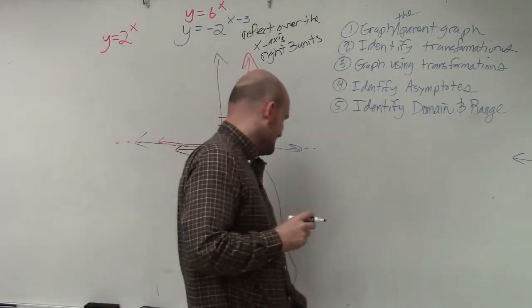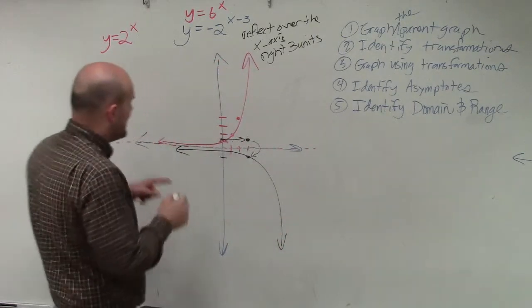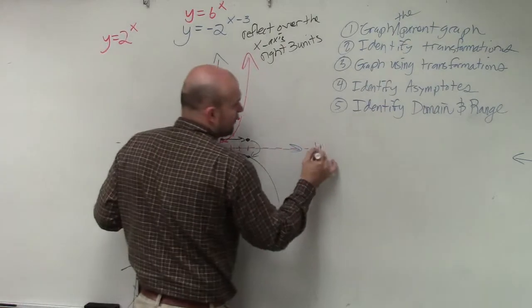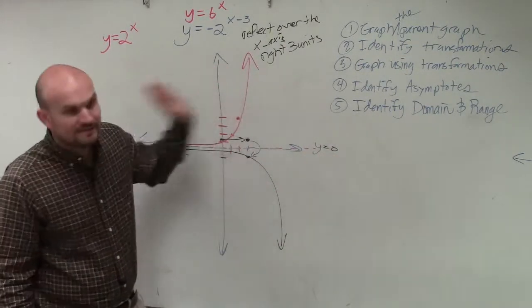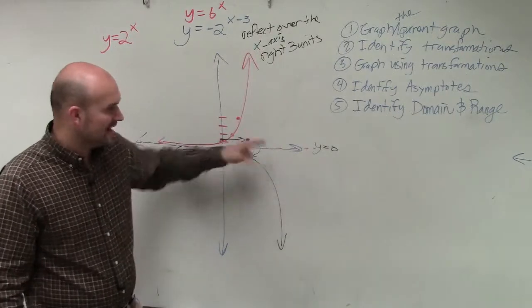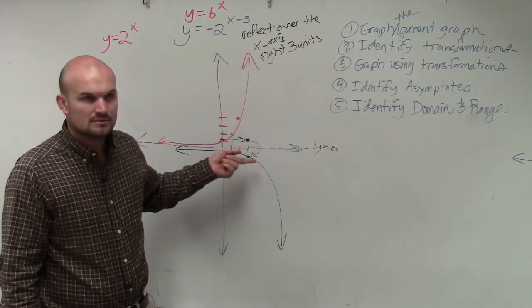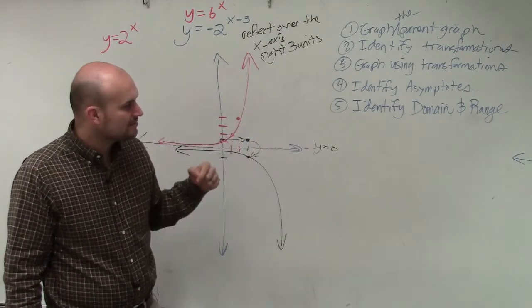Now the next thing is identify the asymptote. If you remember, the asymptote here is at y = 0. Did I move this asymptote by shifting it three units to the right and reflecting? Did that asymptote really move at all? No. So the asymptote is still at y = 0.